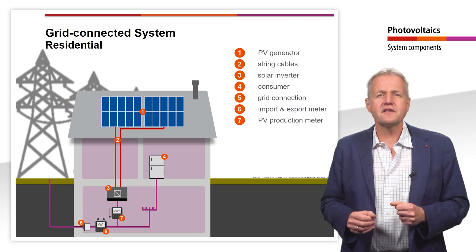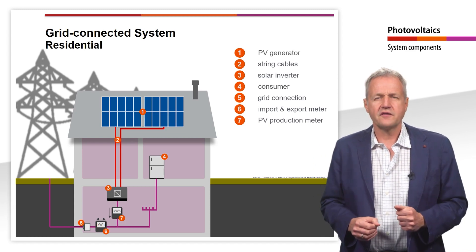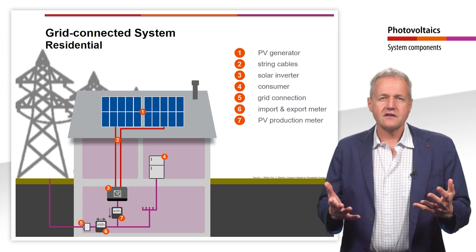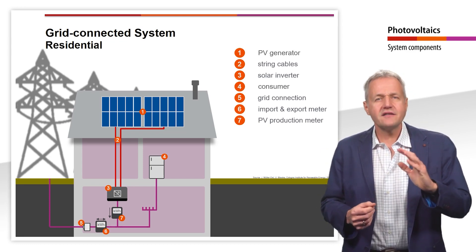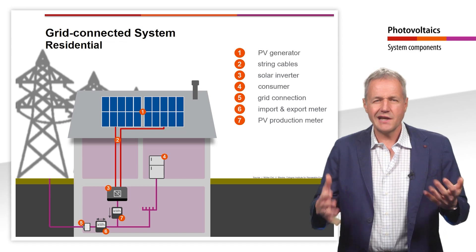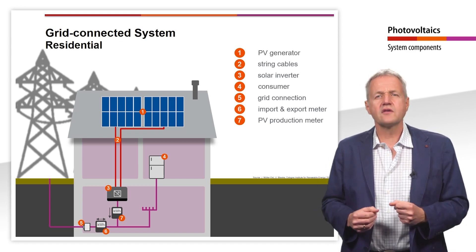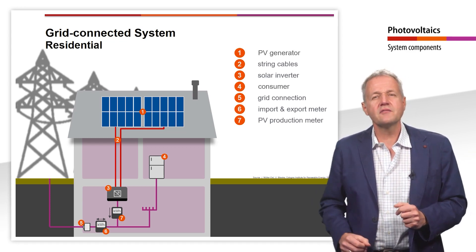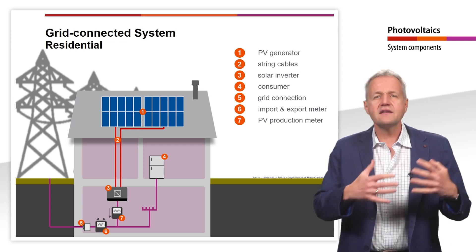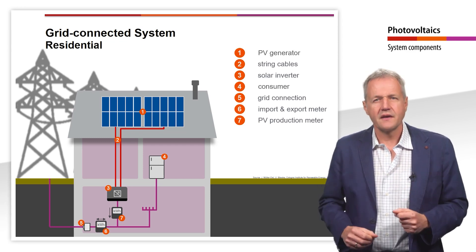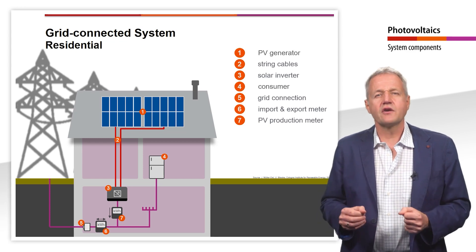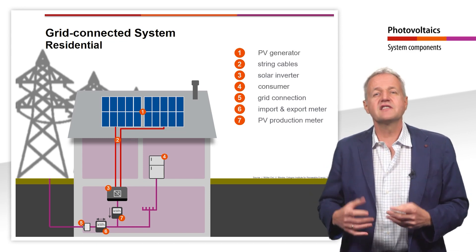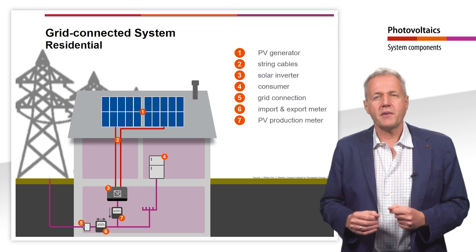This allows us to determine the self-consumption of the PV electricity. The self-consumption is calculated by dividing the self-consumed solar energy by the total electricity consumption in kWh. The self-consumed solar energy results from the difference between the total yield of the PV system, measured by meter 7, and the feed-in, measured by meter 6. The total electricity consumption is calculated from the self-consumed solar energy plus the electricity purchased, which is also measured by meter 6.